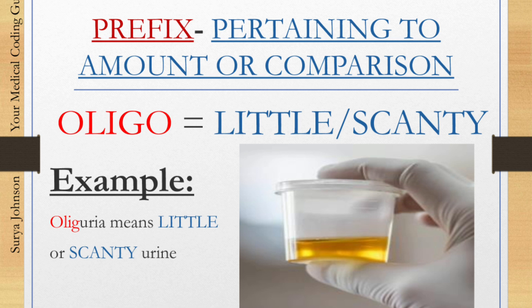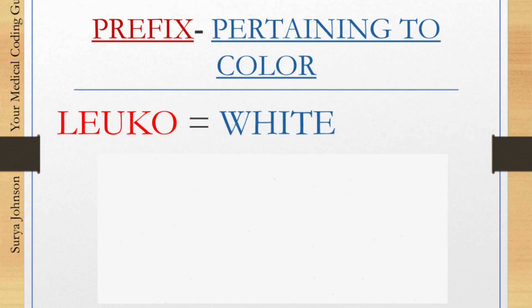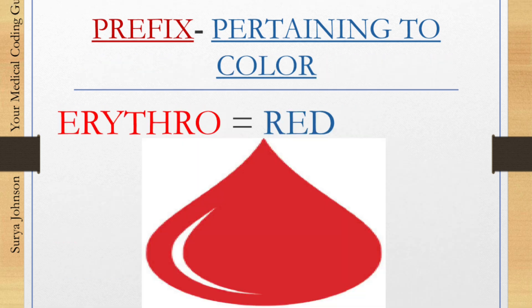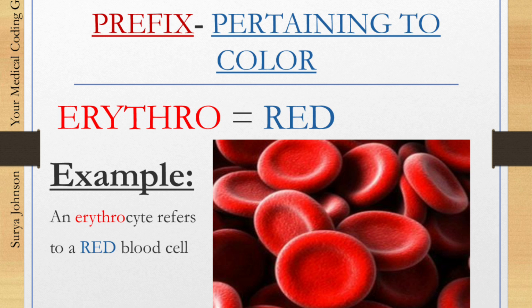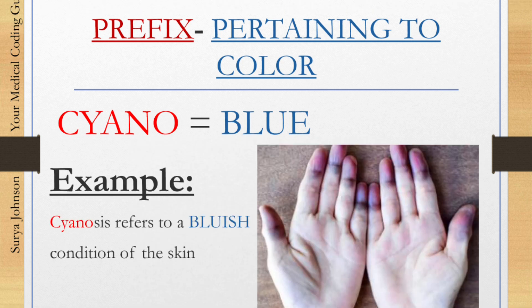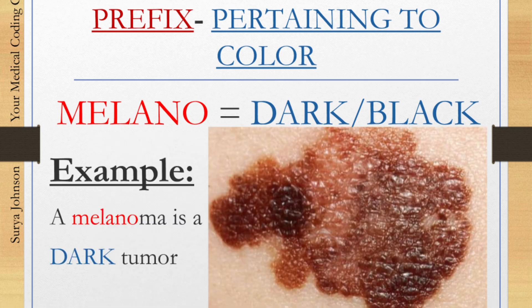Now we'll move on to prefixes pertaining to colour. Number one: 'leuco' means white. Example: a leukocyte refers to white blood cells. Number two: 'erythro' means red — erythrocyte refers to red blood cells. Number three: 'cyano' means blue. Example: cyanosis refers to a bluish condition of the skin. Number four: 'melano' means dark or black. So melanoma means a dark tumour.